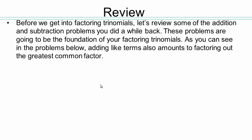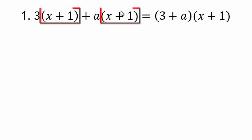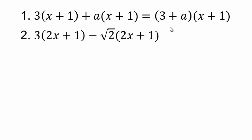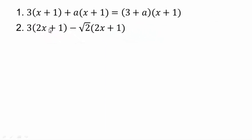Let's review adding using greatest common factor or adding like terms. When we were adding like terms, we said there are 3 x plus 1s and a x plus 1s, so you get 3 plus a x plus 1s. Another way to think of it: x plus 1 is the greatest common factor, so we pull it out and get times 3 plus a. Same thing here — 2x plus 1 is the common factor, so it will be 3 minus square root 2 copies of 2x plus 1. You can think of it as factoring out the greatest common factor.